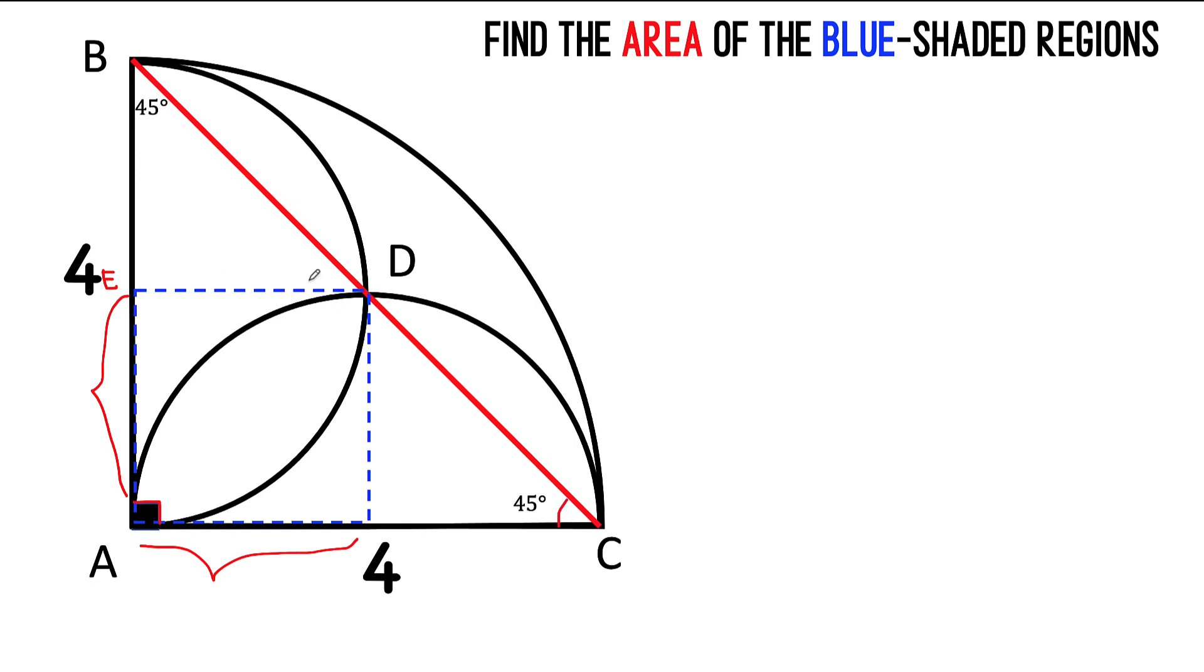So this angle here must be equal to this angle because these are corresponding angles on the same side of a transversal that cut parallel lines ED and AC. So that must also be 45 degrees. Now it's 90 degrees here, this is 45, this must also be 45 degree angle here.